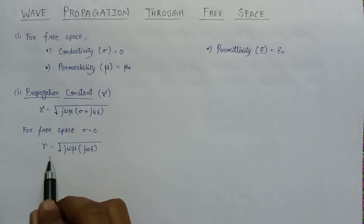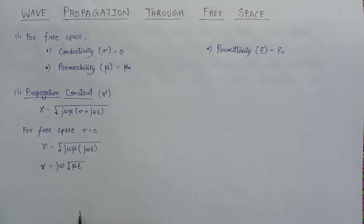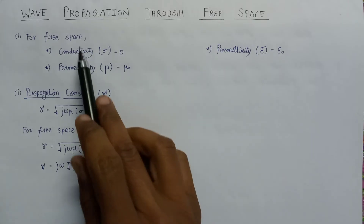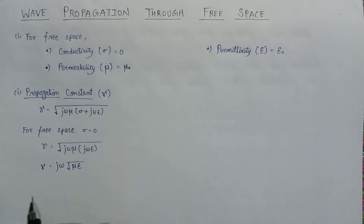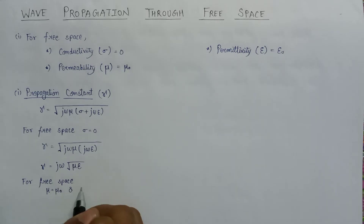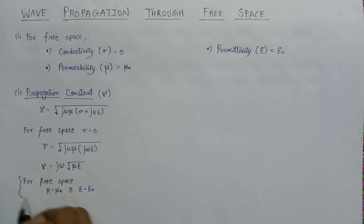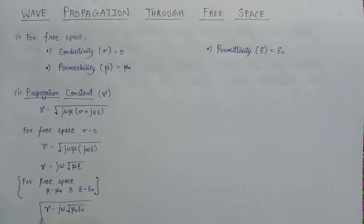Taking j·omega out from under the square root, it becomes j·omega times the square root of mu·epsilon. Since for free space mu equals mu zero and epsilon equals epsilon naught, substituting these values gives the propagation constant as j·omega times the square root of mu zero·epsilon zero. This is the final value of the propagation constant for wave propagation in free space.